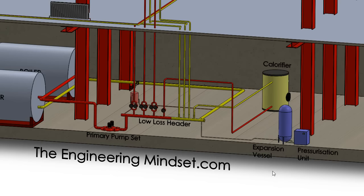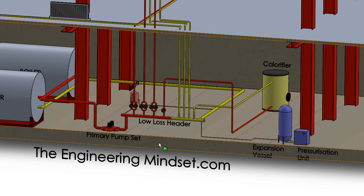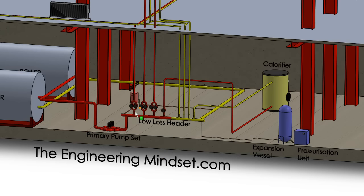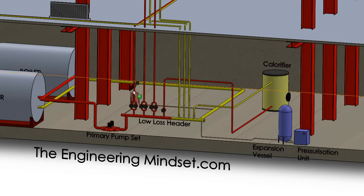Now you can also notice here we've got the expansion vessel and the pressurization unit. The pressure in the system is going to change — for example, if this pump set here is off and turns on, then the primary pump set is going to see a pressure decrease because this is opened up and there's flow there. Conversely, if those pumps stopped working and isolated this, then these pumps will see a pressure increase because there is less room for that water it's pushing to go, and so the friction is going to increase and the pressure will build up. Similarly, when the water in this loop increases or decreases in temperature, it's going to change in density, and that's also going to affect the pressure.